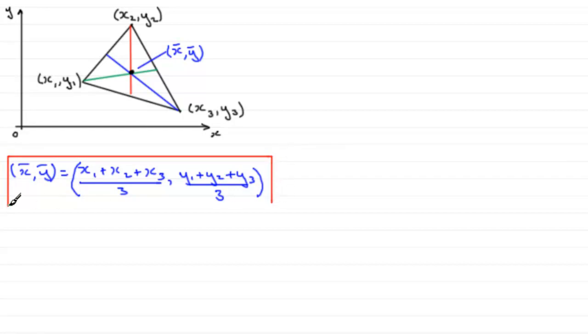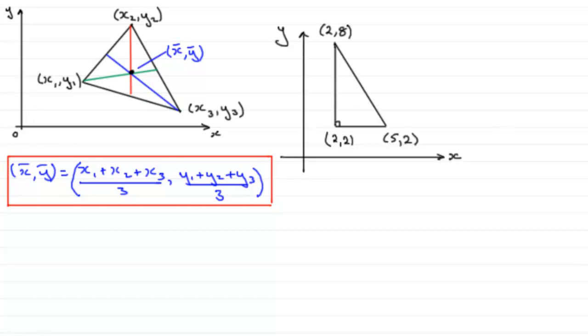And we can use that concept then in the next question. Because here I've got a triangle with vertices at (2,2), (2,8), and (5,2). And so, we would expect that centre of mass to be at the intersection of the medians.